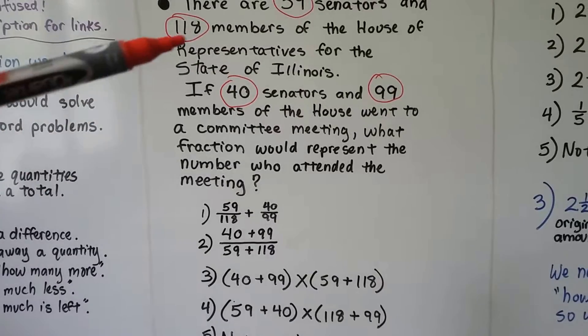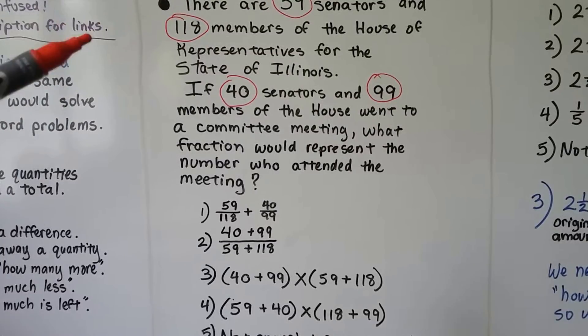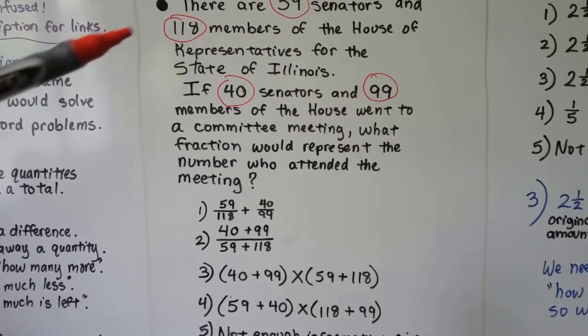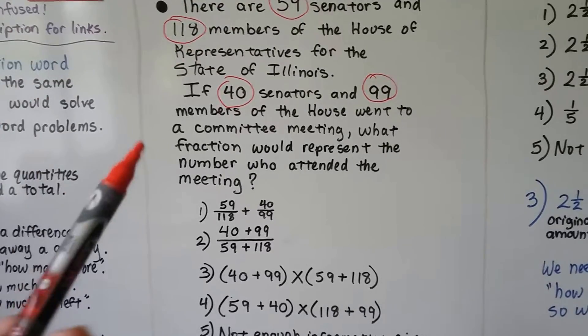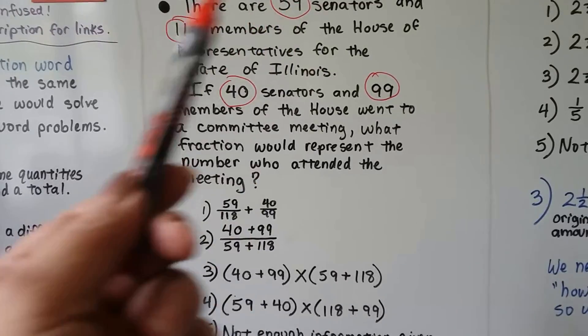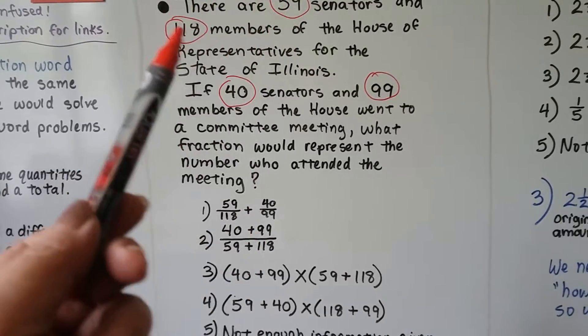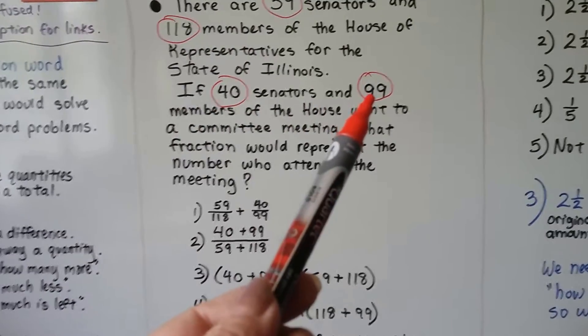Well look at it this way. If all of the senators and all of the members of the House did go to the meeting, how many would be there? Well we'd have to add these two together, wouldn't we? The 59 plus the 118. So if you think of it that way, that's the number in all. That's the number of the entire group that could go to the meeting and the 40 plus 99 would be the amount that actually did go.